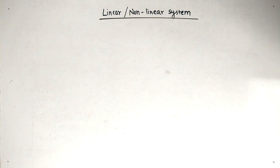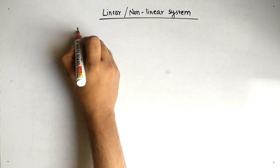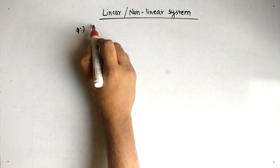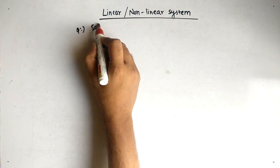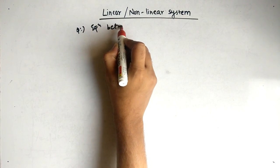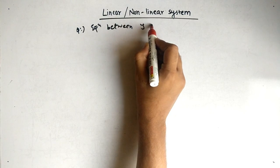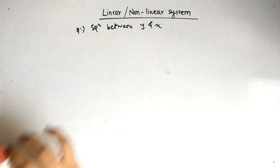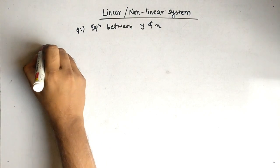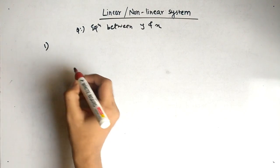Hello friends, today our topic is how to determine whether a system is a linear or a nonlinear system. We have a question with an equation between y and x. The first step we have to do is find, for x1 of t as input, what is y1 of t as output.